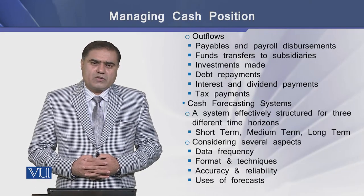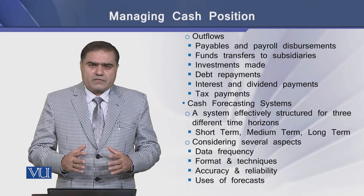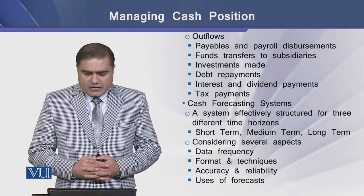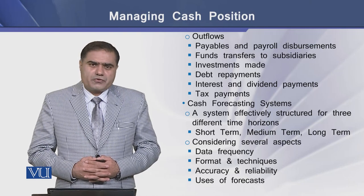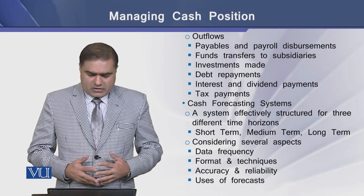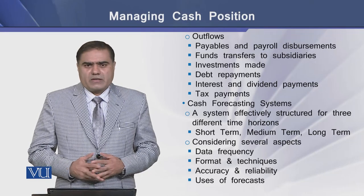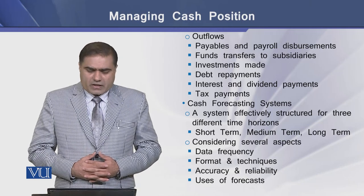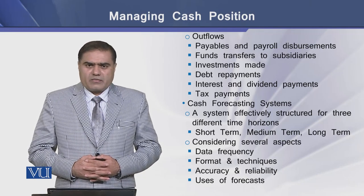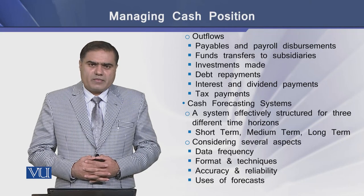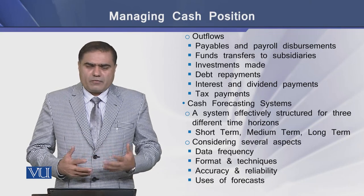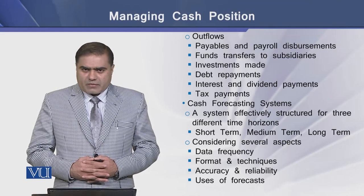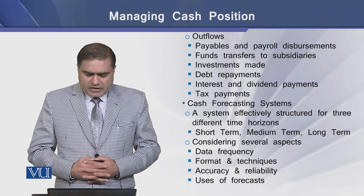Cash outflow items include payments made by the firm to suppliers and to employees in the form of payrolls, funds transferred to subsidiaries or related parties, investments made by the firm, debt repayments in the form of interest and principal repayments, and tax payments made by the firm to tax departments.